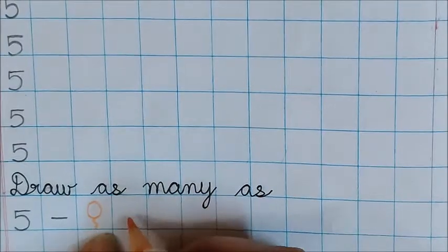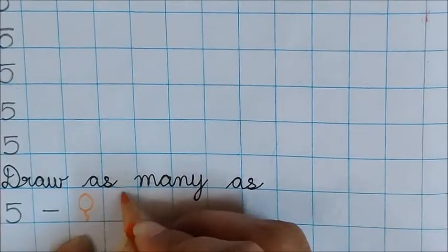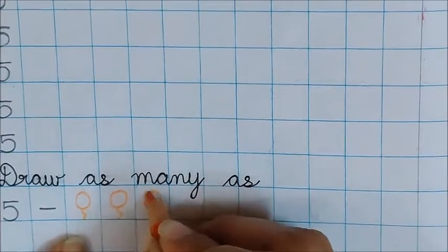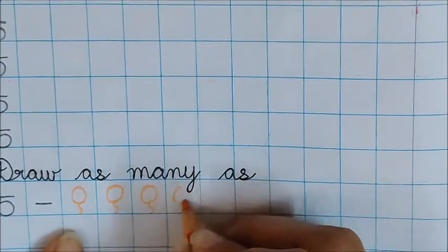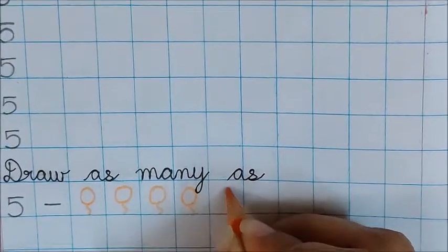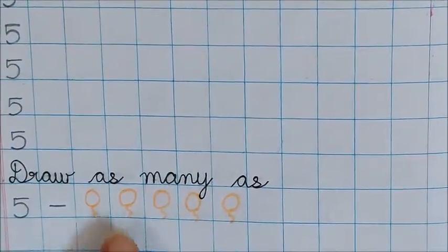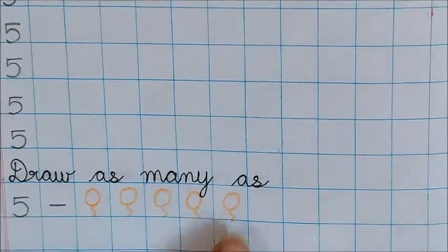Now for number 5 I am going to draw balloons. I am taking my orange color pencil. And in the next box, this is our dash. So in the next box only I am going to draw 5 balloons. I will count and draw. 1, 2, 3, 4, and 5.